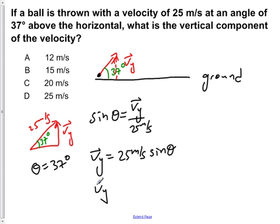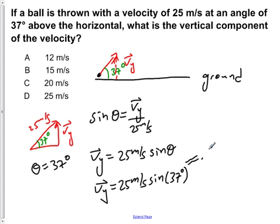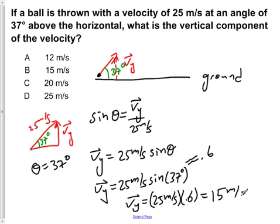So if we plug that value in, we get Vy is equal to 25 meters per second times the sine of 37 degrees. The sine of 37 is roughly equal to 0.6, so Vy is equal to 25 meters per second times 0.6, which gives a value of 15 meters per second for the vertical component of the velocity, which corresponds to answer B, 15 meters per second.